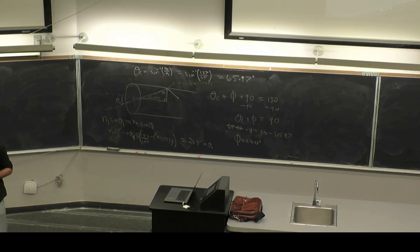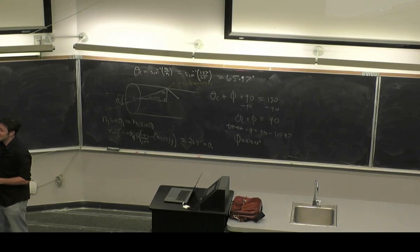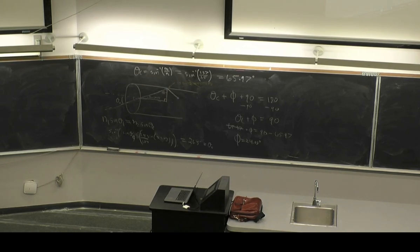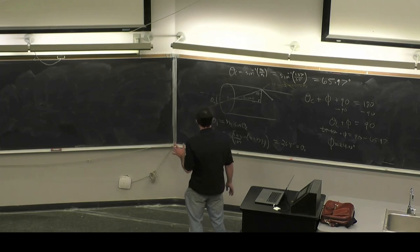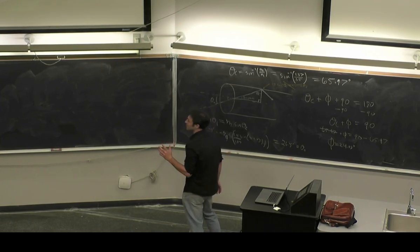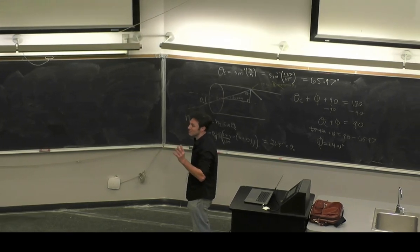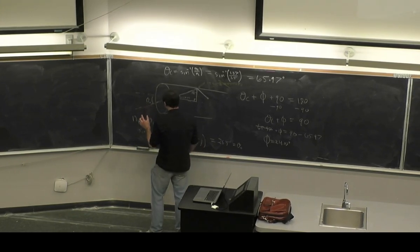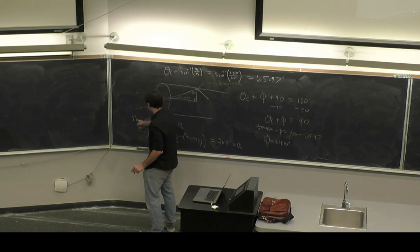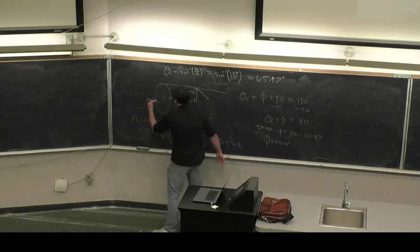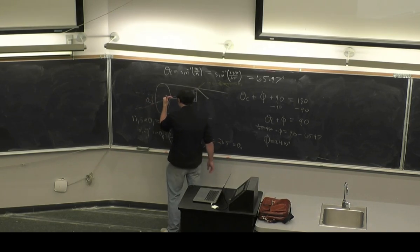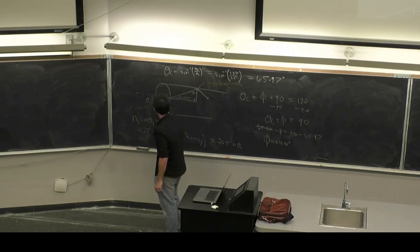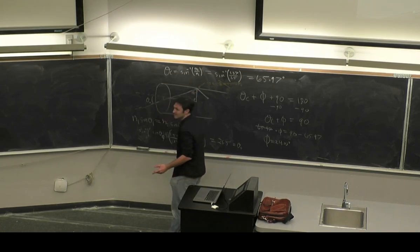The index of refraction of the glass is 1.5 and the index of refraction of the blood is 1.37 — those are given in the problem. When doing these index of refraction problems, the medium where the light ray starts is medium one. For this example, the light ray starts in blood, so n1 is the index of refraction for blood, theta one is theta zero, and when it hits the surface and refracts through, that's n2 — and the angle it refracts through is this phi angle. That make sense?